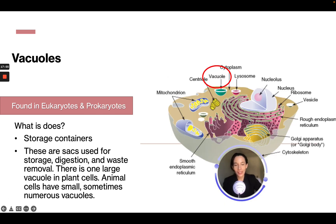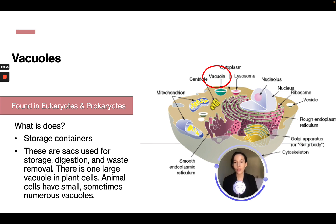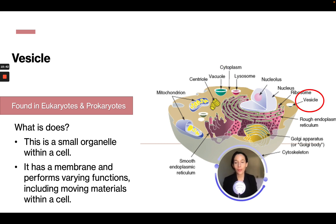Vacuoles are storage containers found in both prokaryote and eukaryote cells. They are sacks used for storage, digestion, and waste removal. Plant cells have only one vacuole, while animal cells can have small, sometimes numerous vacuoles. Vesicles are small organelles found in both eukaryote and prokaryote cells; they have a membrane and perform various functions, including moving materials within the cell.